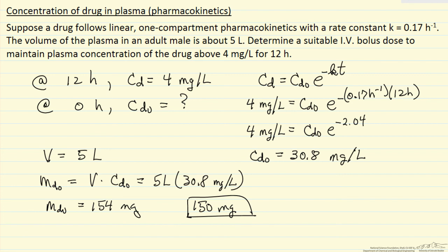So in this problem, we start out with a high concentration, 30.8, decays over 12 hours, so that 12 hours is at 4 mg per liter.